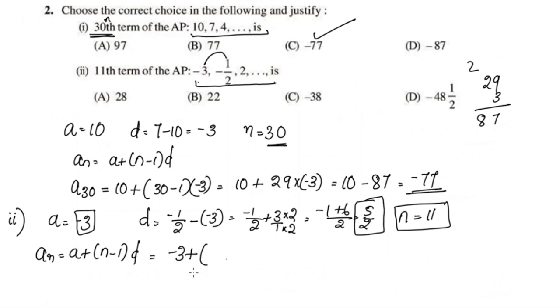Now we will apply the values. N is 11. a_11 equals negative 3 plus 11 minus 1, which is 10, times 5 by 2. This equals negative 3 plus 25, which equals 22. Option B is correct.